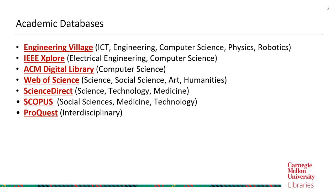Next is ScienceDirect, which covers science, technology, and medicine fields. After that is Scopus, a major citation and abstract database mainly covering social sciences, medicine, and technology. The final one is ProQuest, an interdisciplinary database covering a wide range of subject disciplines ranging from engineering to social sciences.